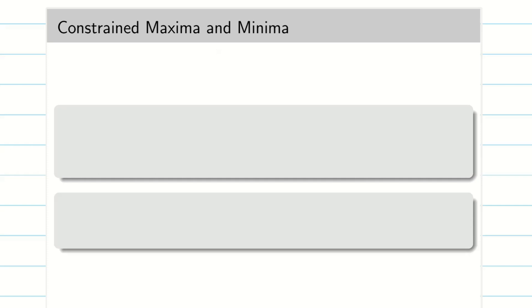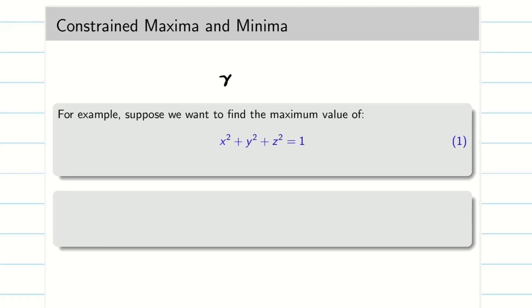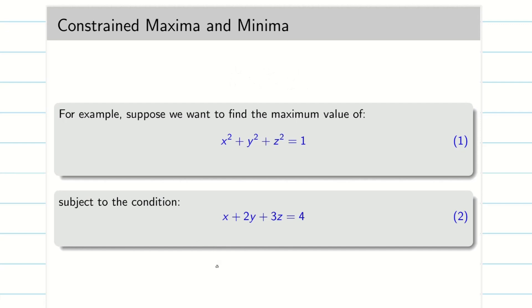Constrained Maxima Minima. In many practical problems on Maxima Minima, we have to find the extreme values of a function of two or more variables which are not independent but are connected by some relation. For example, suppose we have x² + y² + z² = 1, and we want to find the maximum value of this equation subject to the condition x + 2y + 3z = 4.